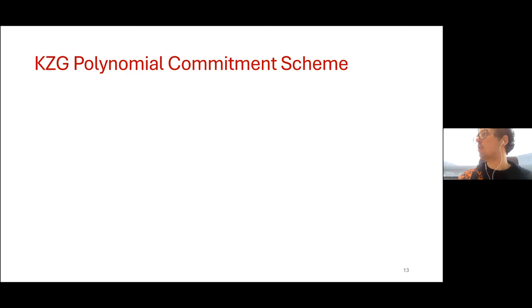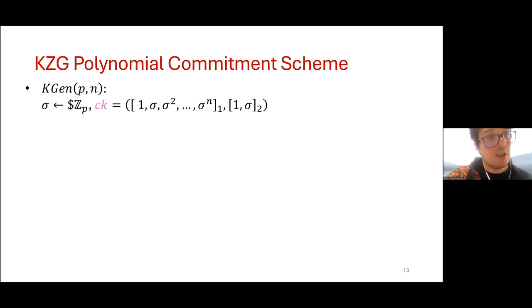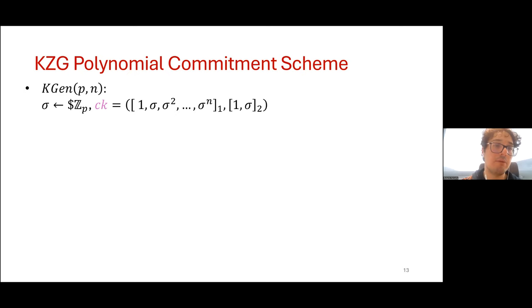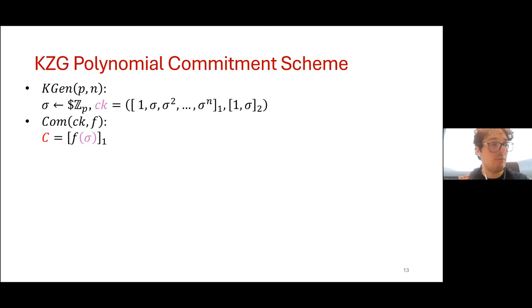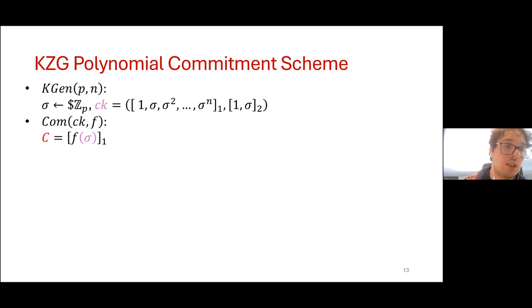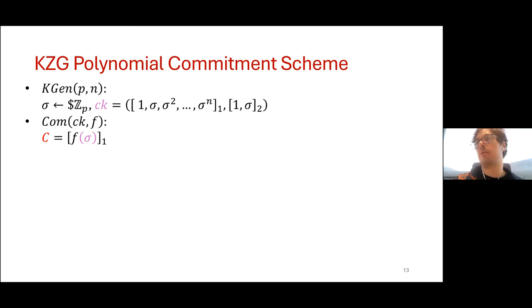Now let me present the KZG polynomial commitment scheme with its four algorithms. The key generation algorithm samples a random integer sigma, then outputs the commitment key in the form of group elements in G1 of order sigma to various powers up to n, plus the generator and the element of order sigma in G2. The commitment algorithm computes the group element in G1 of order f(sigma), where f is the committed polynomial and sigma is the trapdoor in the CRS. Since f is a polynomial of degree up to n and the commitment key contains all elements of order up to sigma^n in G1, this is an easy task.